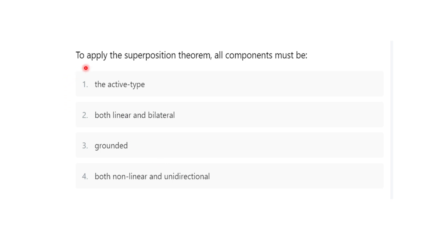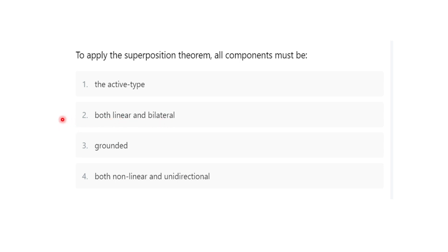Here is an MCQ. To apply the superposition theorem, all components must be: (a) active type, (b) both linear and bilateral, (c) grounded, or (d) both non-linear and unidirectional. The correct option is both linear and bilateral. In order to apply the superposition theorem, all components must be both linear and bilateral. If you don't know the meaning of linear and bilateral, you can watch my previous video.